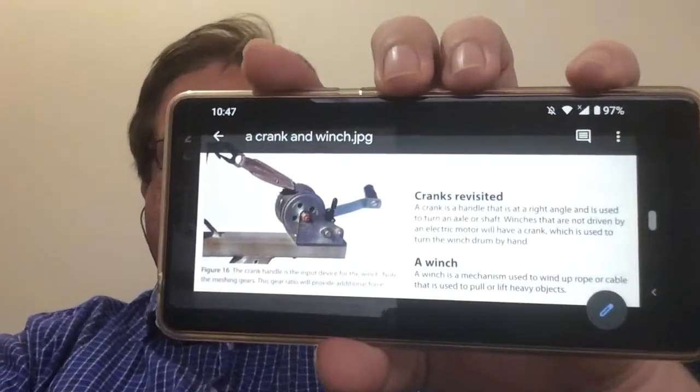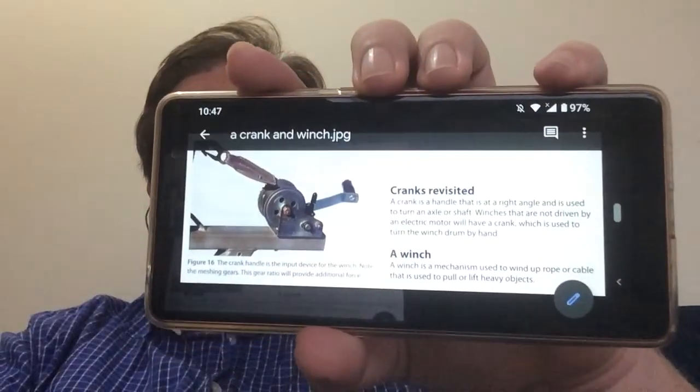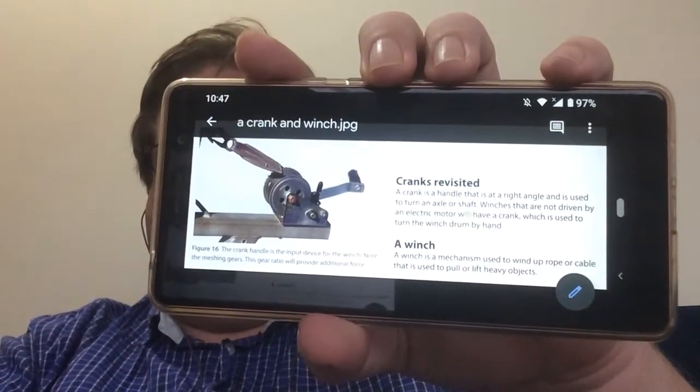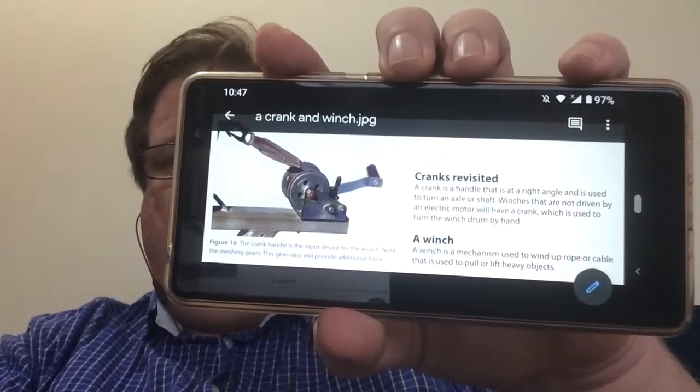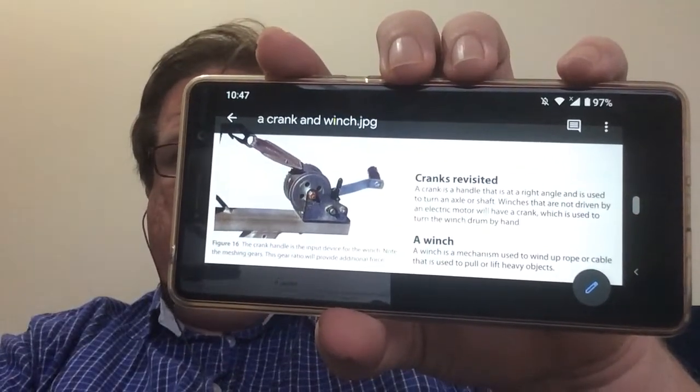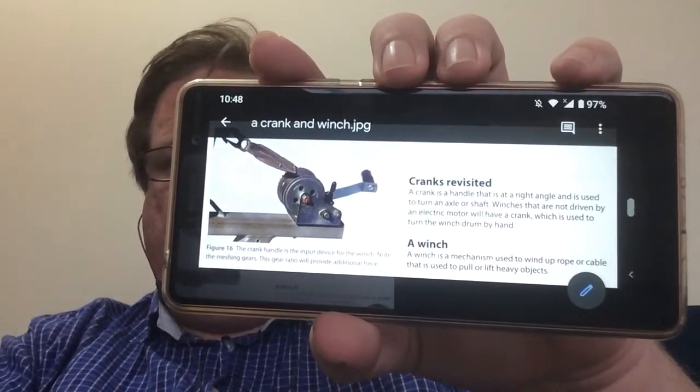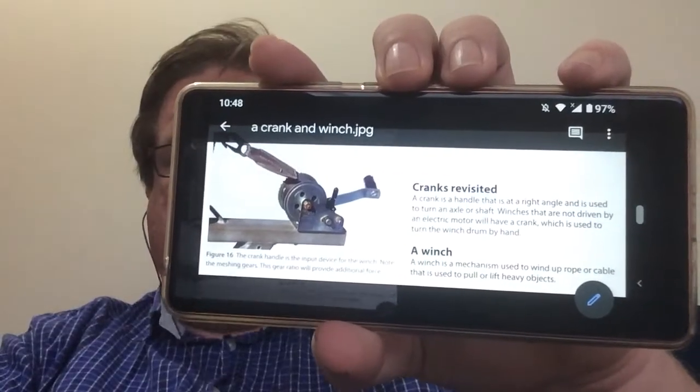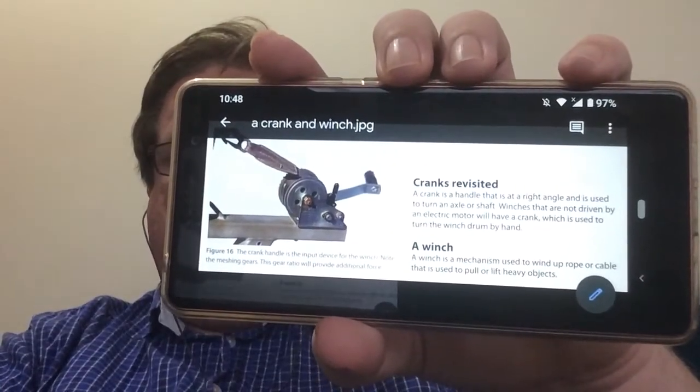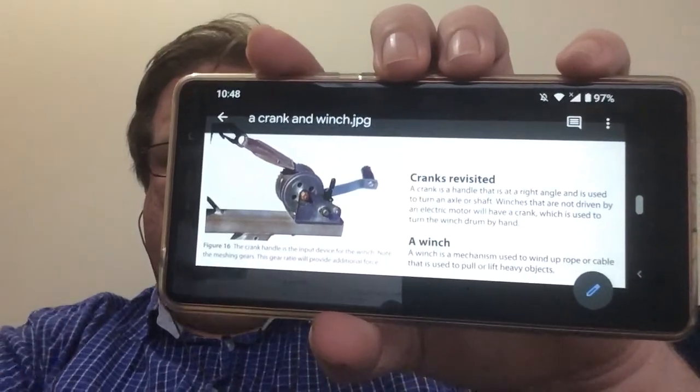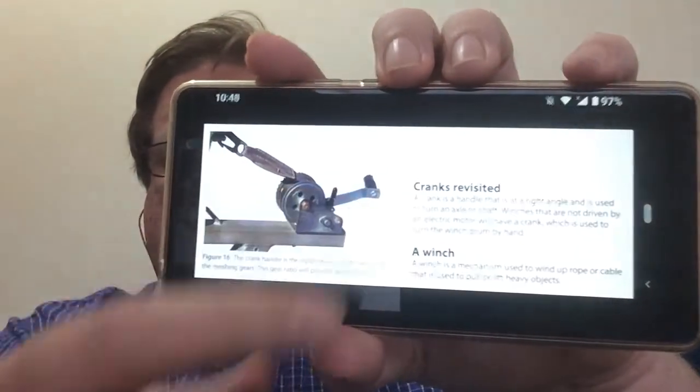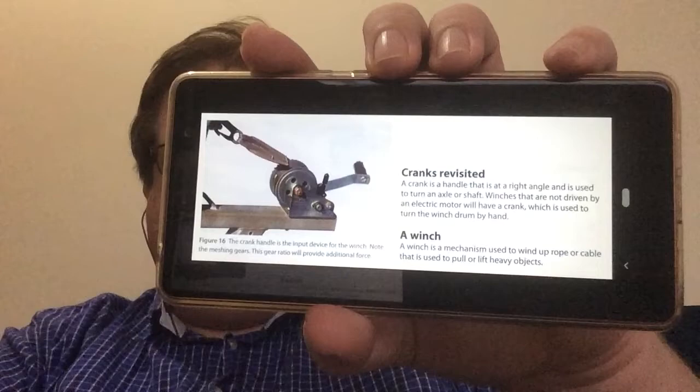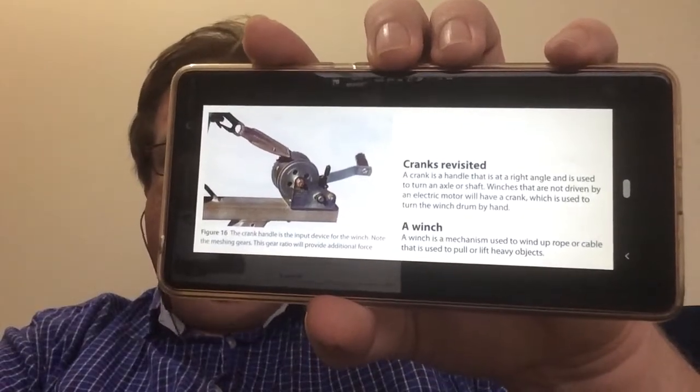And this cranking mechanism will then allow you to turn the axle or shaft and you can then manually winch a boat or something heavy. Or in case of making a crane, for example, you can manually winch the thing that you're trying to lift up and down. So that's a crank and a winch.